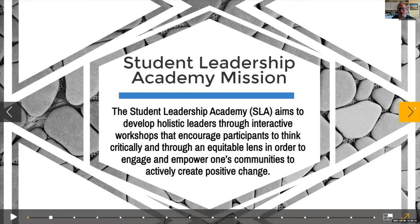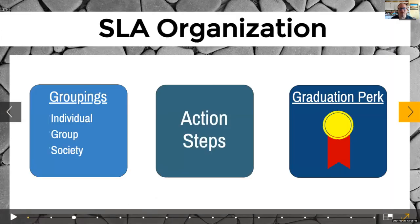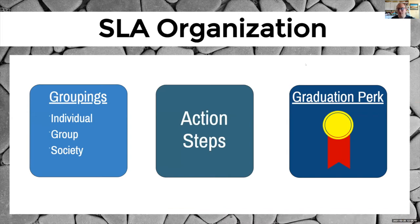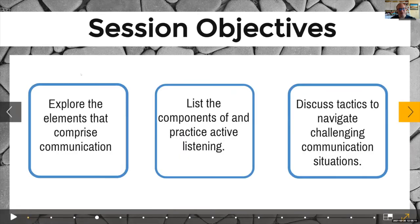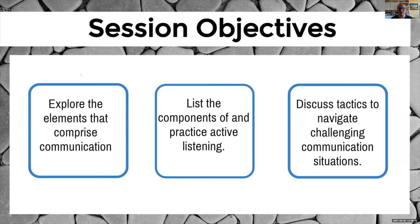Quick recap: the goal of the Student Leadership Academy is both to develop job-related skills and to develop your capacity for being a catalyst for social change. It's 10 workshops split across three levels, plus six action steps — each about two to five minutes to put ideas into practice. If you complete all 10 workshops and six action steps, there is a medal as part of your graduation. Today's session on interpersonal communication has three objectives: explore the elements of effective communication, practice active listening, and discuss tactics for navigating challenging communication situations.